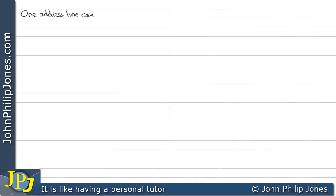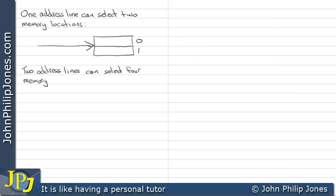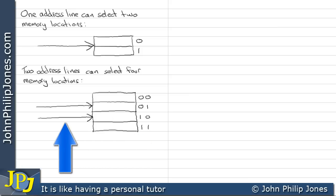One address line can select two memory locations. For example, here's the one address line and these are the two memory locations at address 0 and 1. Two address lines can select four memory locations. We can see the memory split up into four locations — those are the addresses and these are the two address lines.